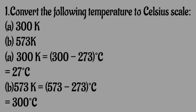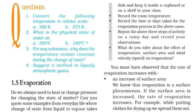Next, convert 573 K: 573 minus 273 equals 300 degree Celsius.